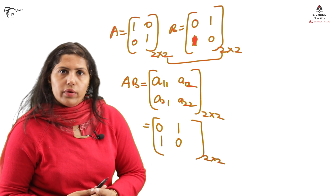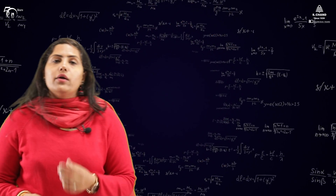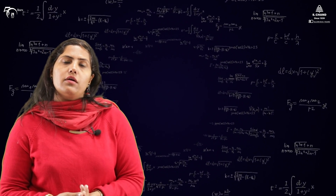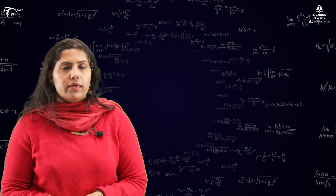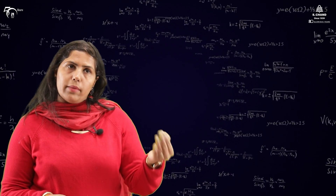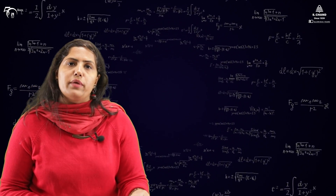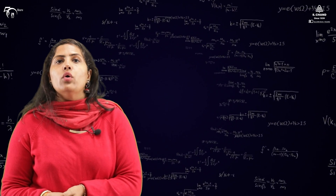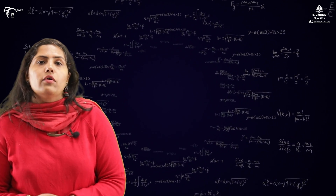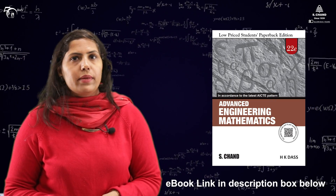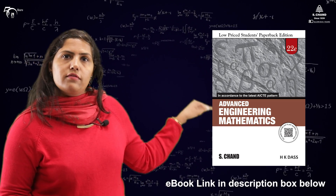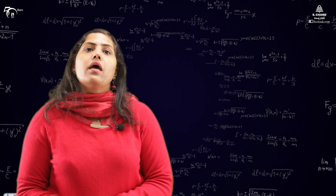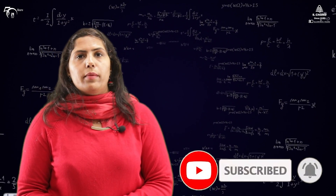So in part 2 we did matrix multiplication and understood the conditions under which we can multiply two matrices. The number of columns of the first matrix must equal the number of rows of the second matrix. We also learned how to determine the order of the resulting matrix. Please refer to the S.Chan Publishing book for more detail — the ebook link is in the description. If you liked the video, please like, share, and subscribe to S.Chand Academy, and press the bell icon for upcoming video updates.